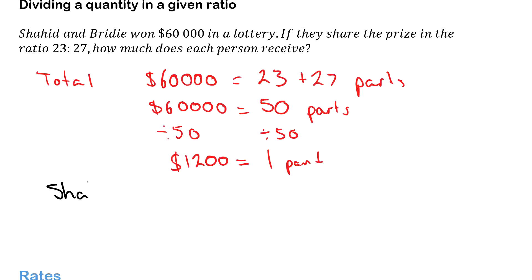So Shahid gets 23 times $1,200, and Brydie gets 27 times $1,200. Because we're dealing with money, make sure you put the right units, dollar signs.